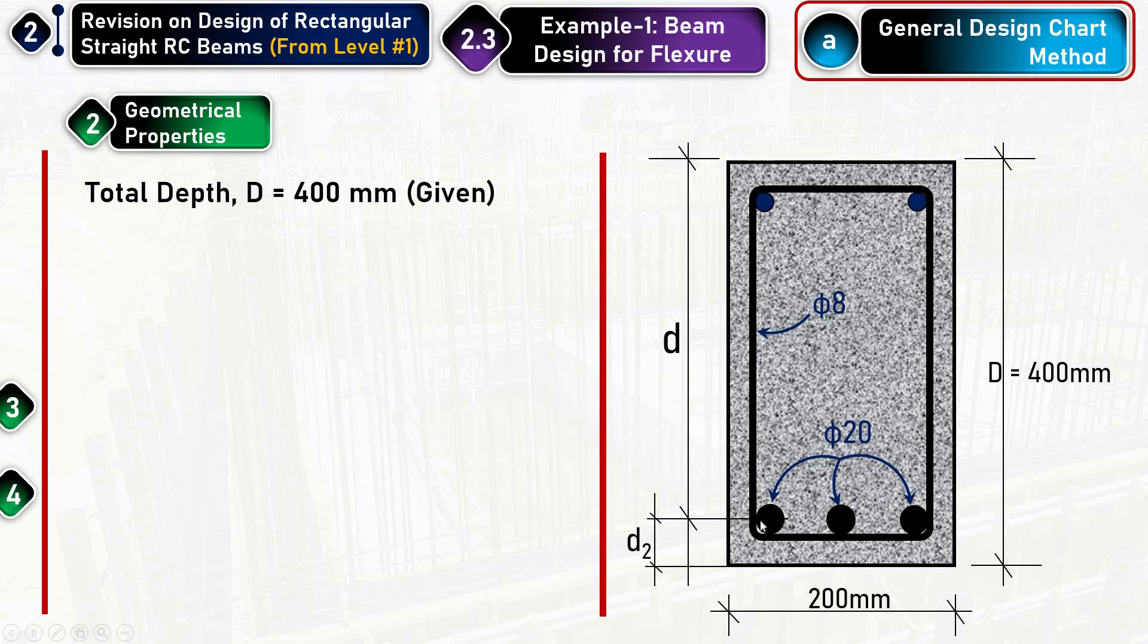Now here, if you have maybe two layers of reinforcement, you have to calculate the centroid and from that centroid up to the compression fiber end, this is what we call the effective depth.